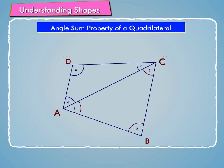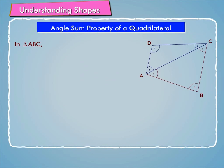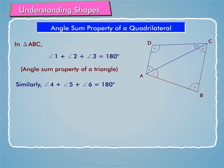Now in triangle ABC, by the angle sum property of a triangle, angle 1 plus angle 2 plus angle 3 is equal to 180 degrees. Similarly, angle 4 plus angle 5 plus angle 6 is equal to 180 degrees.